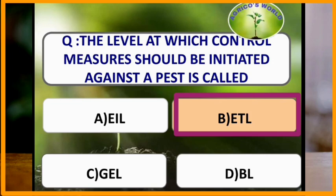The level at which control measures should be initiated against a pest is called the economic threshold level. At the economic threshold level, control measures should be initiated for controlling the pest.